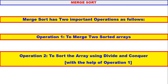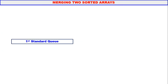First we will consider merging two sorted arrays. To understand merging of two sorted arrays, we shall consider a first-standard queue. Go back to your childhood days — when you were studying in first standard, you would stand in the queue for morning prayers according to your heights. Here also, we will consider students who stand in the queue according to their heights.